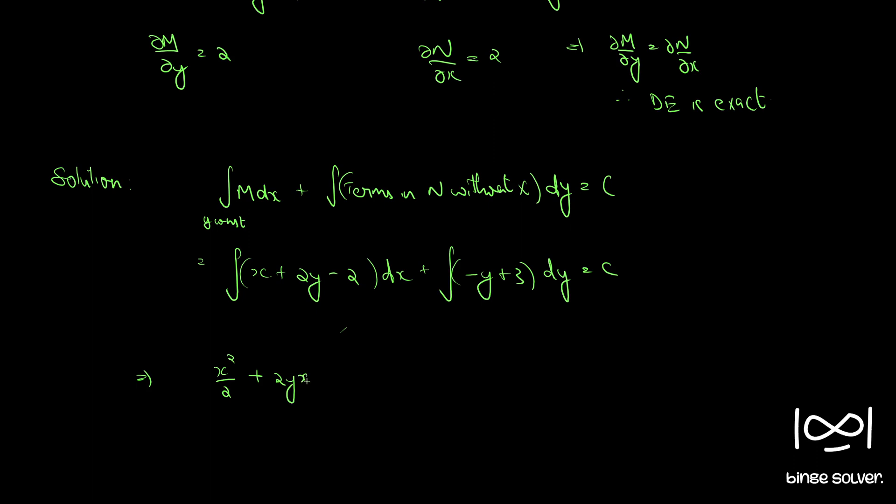plus 2yx minus 2x minus y square by 2 plus 3y equal to c.